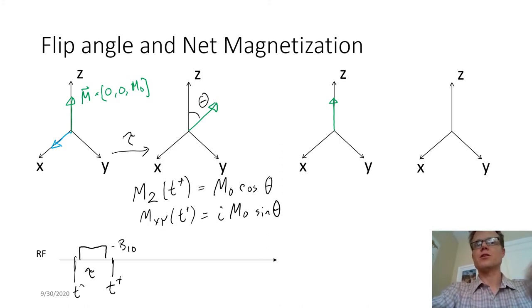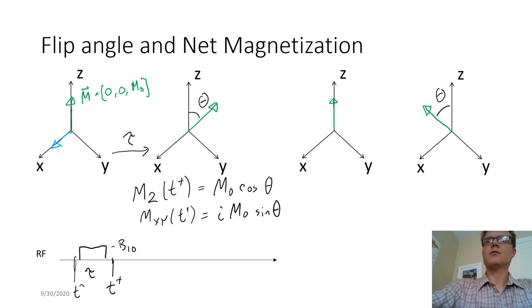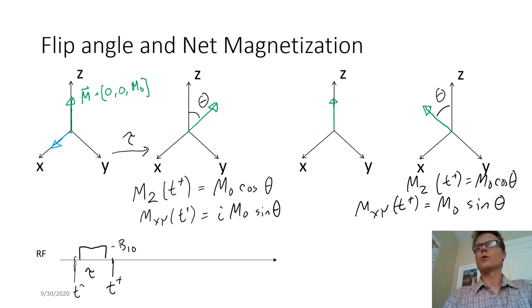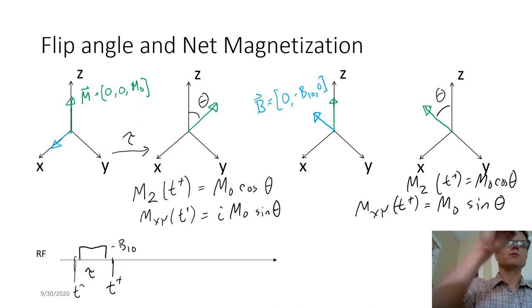Just a brief point: we can actually choose the direction of this RF pulse. I could play the RF pulse such that our net magnetization is rotated into the X-plane, so we could end up with the same longitudinal magnetization but transverse magnetization that's on Mx — no imaginary component. This would be accomplished by playing an RF pulse along the minus-Y axis, as opposed to this case where the RF pulse is along the X axis.